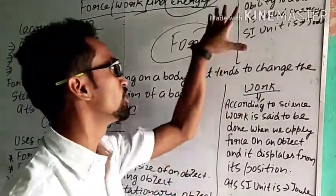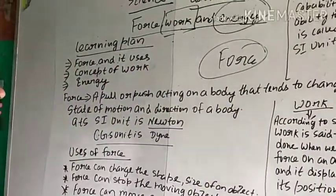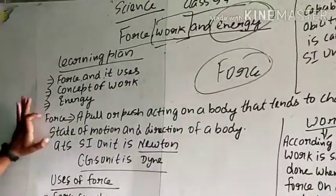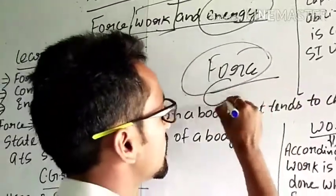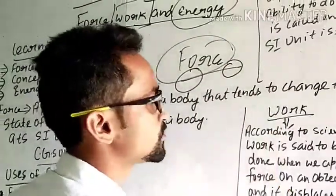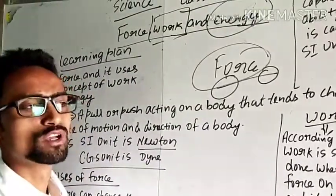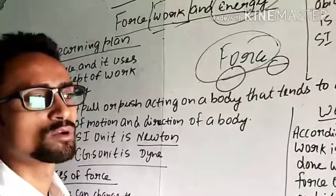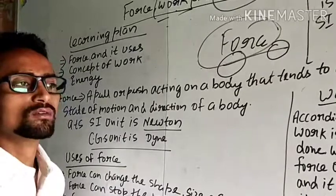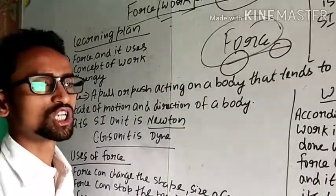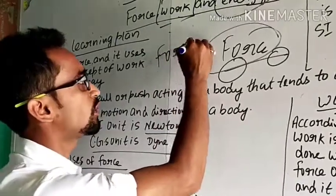Now we can see the learning plan of this chapter: force and its uses, concept of work and energy. Force means we can say that force can change the shape and size of an object. Force can move a stationary object. Force can stop a moving object. Force can change the direction of a moving object.